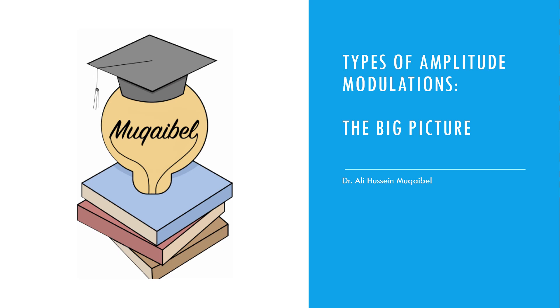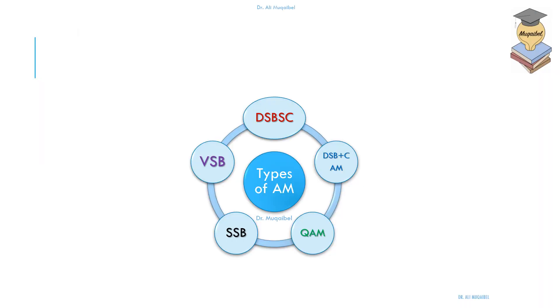Now, let us discuss the types of amplitude modulations in the big picture. We'll look at the things from the top. There are different types for amplitude modulation: double sideband suppressed carrier, double sideband plus carrier or in short AM, quadrature amplitude modulation, single sideband, and vestigial sideband. So let's try to understand how these are related.